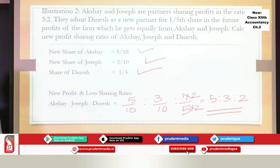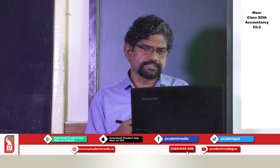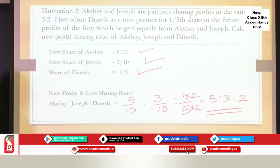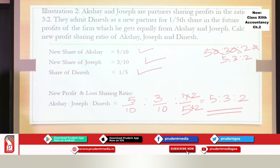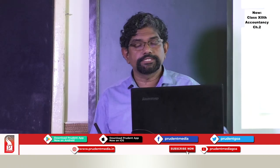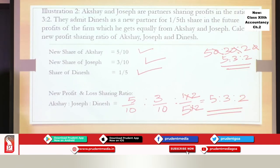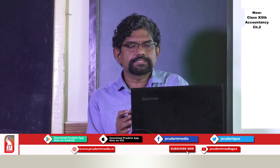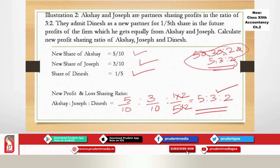Remember, a ratio should always be expressed in the shortest way possible. For example, if you get 50:30:20, you divide each by 10 to get 5:3:2. You should always be able to divide all numbers by a common number to express the ratio in its minimum form.